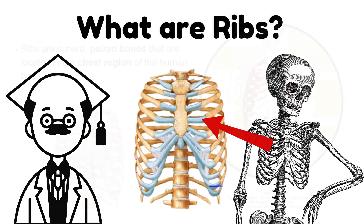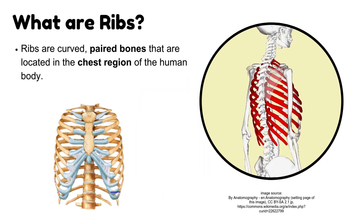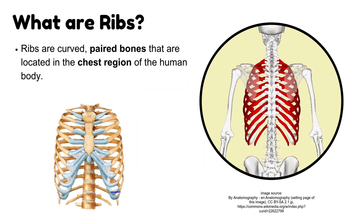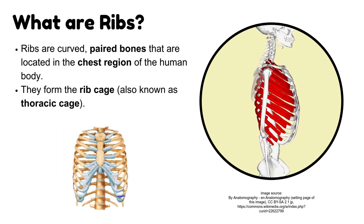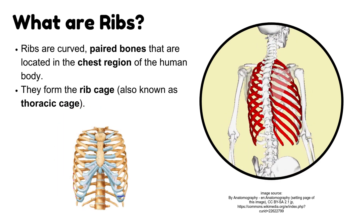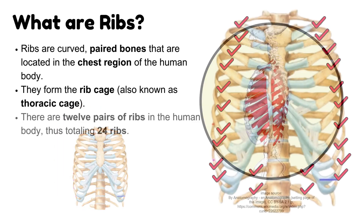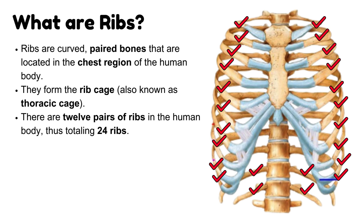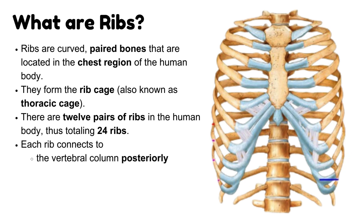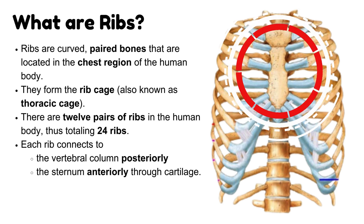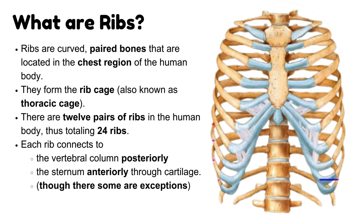What are ribs? Ribs are curved, paired bones located in the chest region of the human body. They form the rib cage, also known as the thoracic cage. There are 12 pairs of ribs in the human body, totaling 24 ribs. Each rib connects to the vertebral column posteriorly and the sternum anteriorly through cartilage, though there are some exceptions.